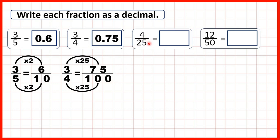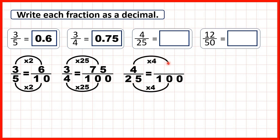Now we have four over twenty-five. Well, one hundred is a multiple of twenty-five, and twenty-five times four is a hundred. What we do to the denominator, we do to the numerator as well, and four times four is sixteen. So the denominator of a hundred tells us that we need two digits after the decimal point, so we write sixteen hundredths as zero point one six — the one gets moved over to the tenths.